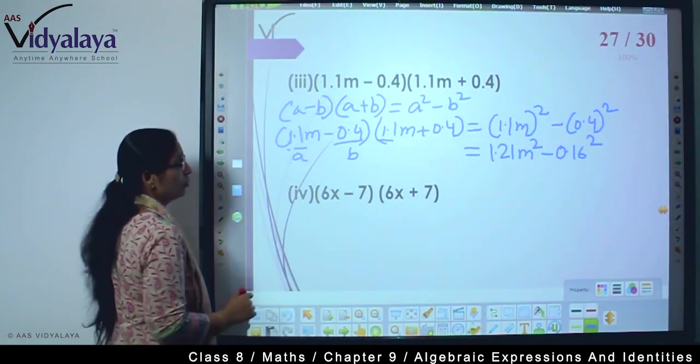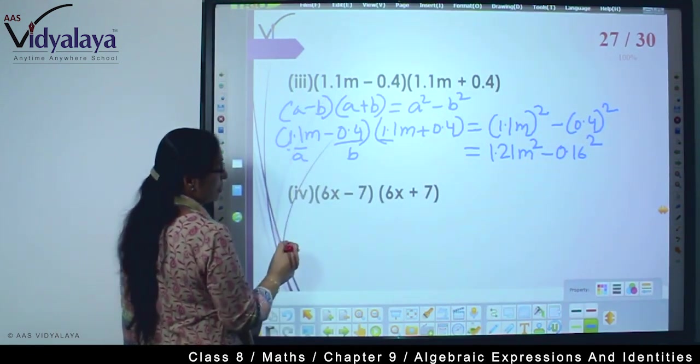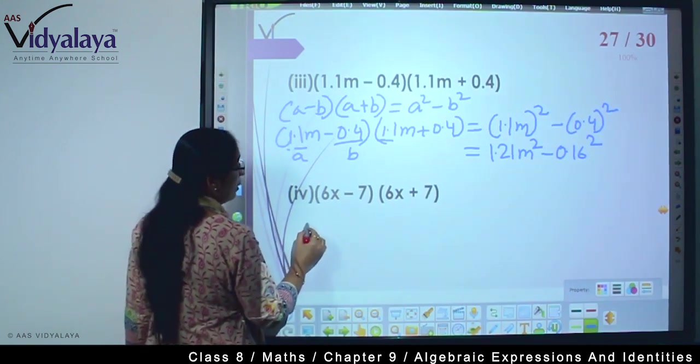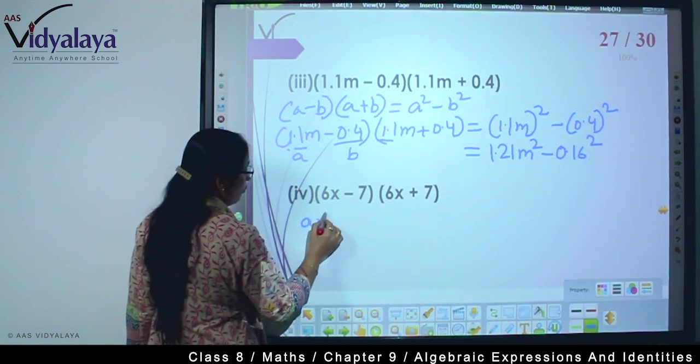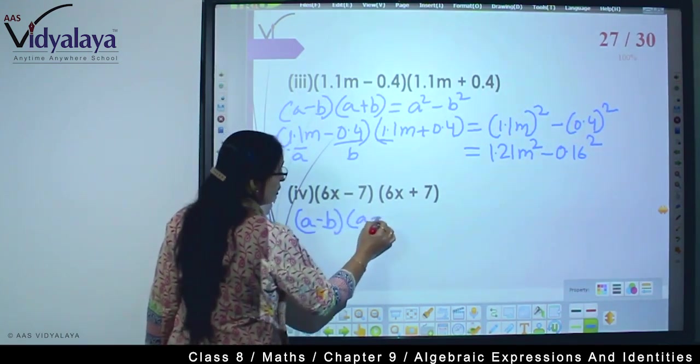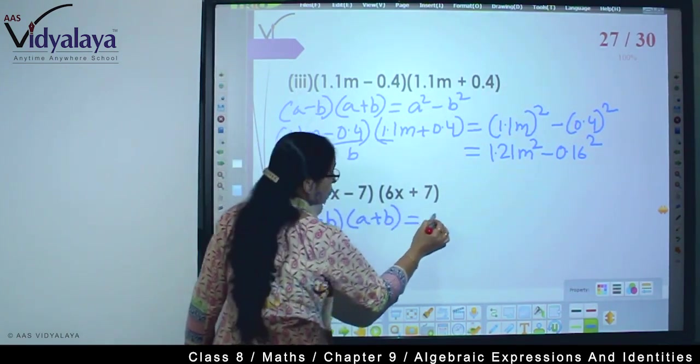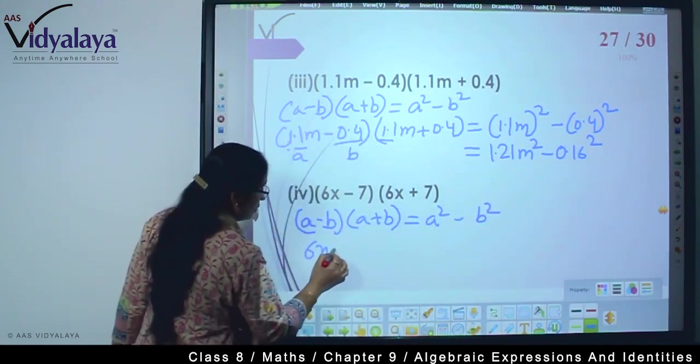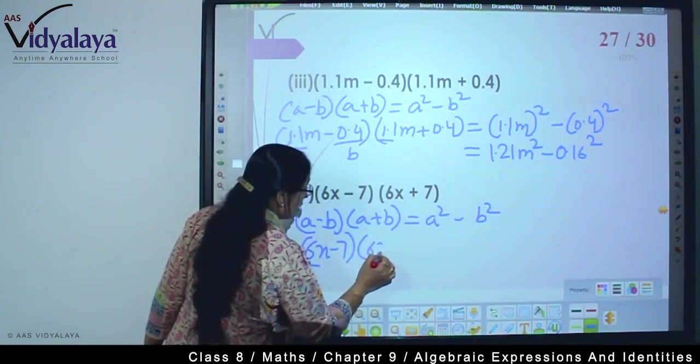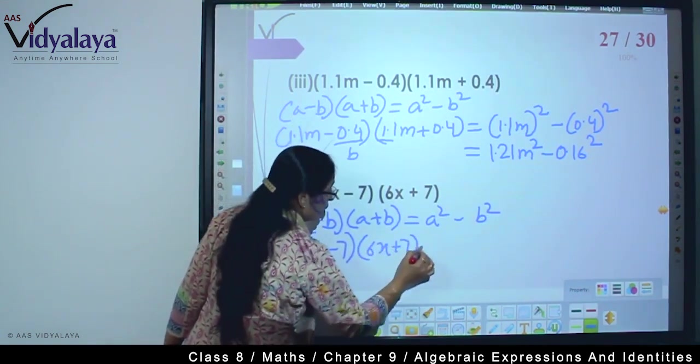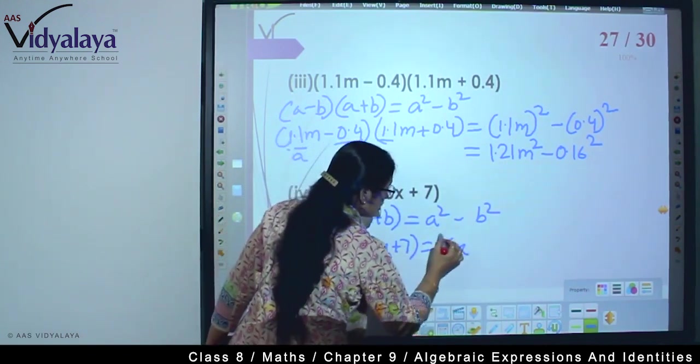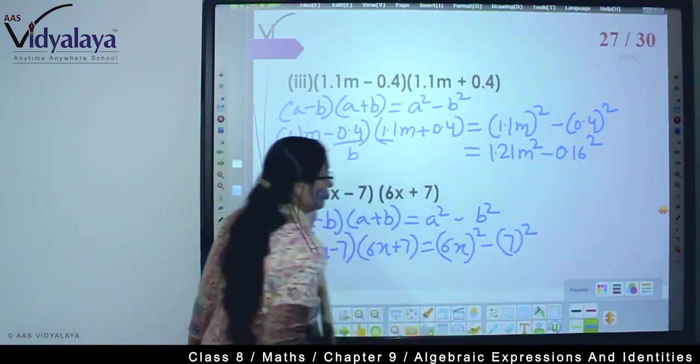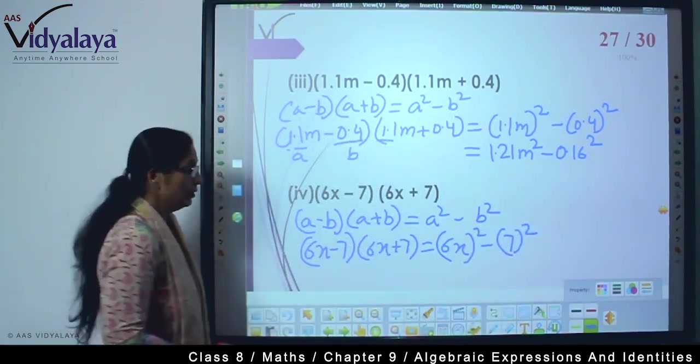The same way we are going to do - the identity is the same. So how will we write? If we write the formula clearly, you won't get confused. This is a² - b². So (6x-7)(6x+7) is equal to (6x)² - 7².